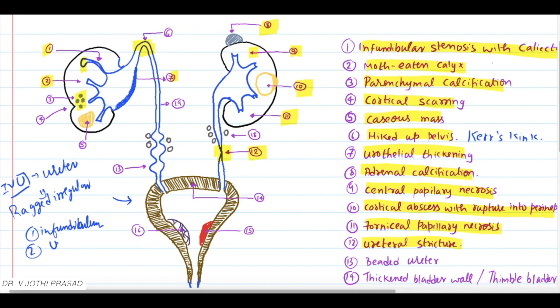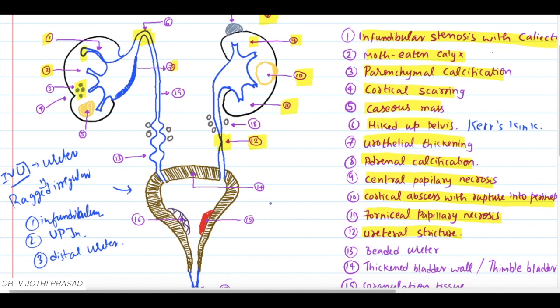Coming to the next finding: the most classical finding, the beaded ureter. All these stricture pathologies will lead to beaded, or pipe-stem, or corkscrew ureter.